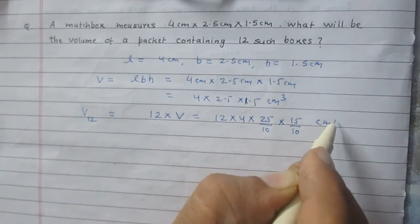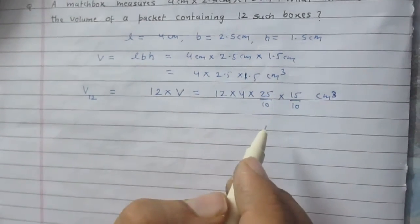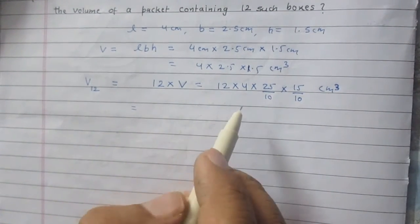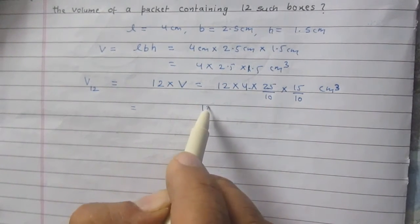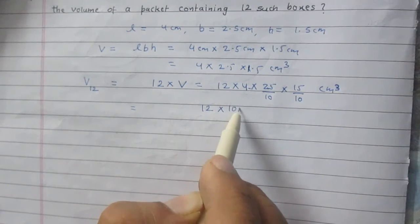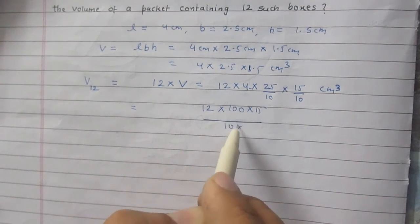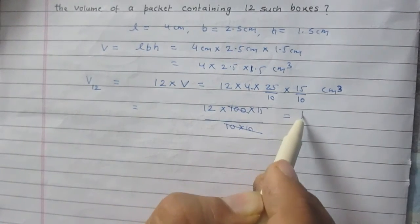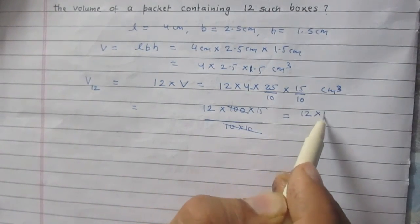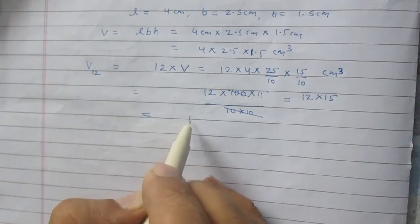And then cm cube, its unit. So on simplifying we find that 4 into 25 is 100. So it is 12 into 100 into 15 whole divided by 10 multiplied by 10. So they can be cancelled by 100. Finally you will get 12 and 15 in multiplication. And it is 180.